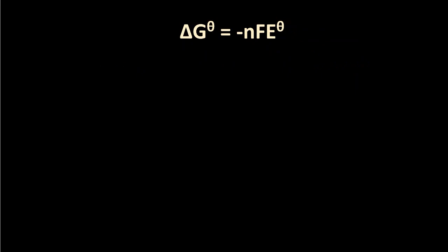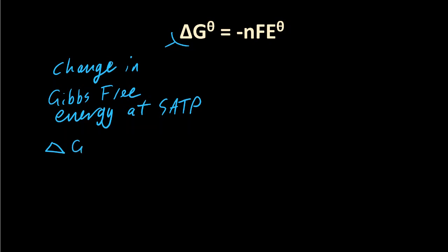Let me tell you what the variables are. Delta G theta is the change in Gibbs free energy. Just to refresh you again, if delta G theta is positive, then it is a non-spontaneous reaction. That means it won't happen. If delta G theta is zero, that means you have an equilibrium. And if delta G theta is negative, then the reaction is spontaneous.